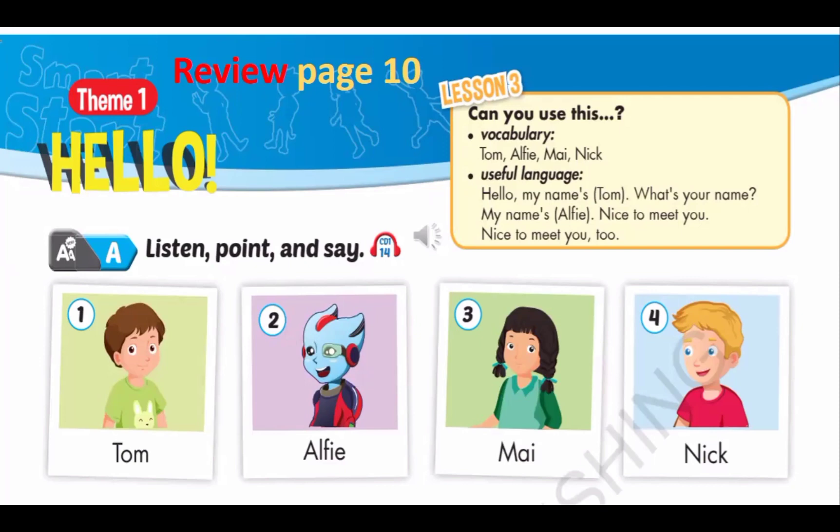Number four: Nick. Give me an N — N. Give me an I — I. Give me a C — C. Give me a K — K. What does it spell? Nick. Well done. Awesome sauce.